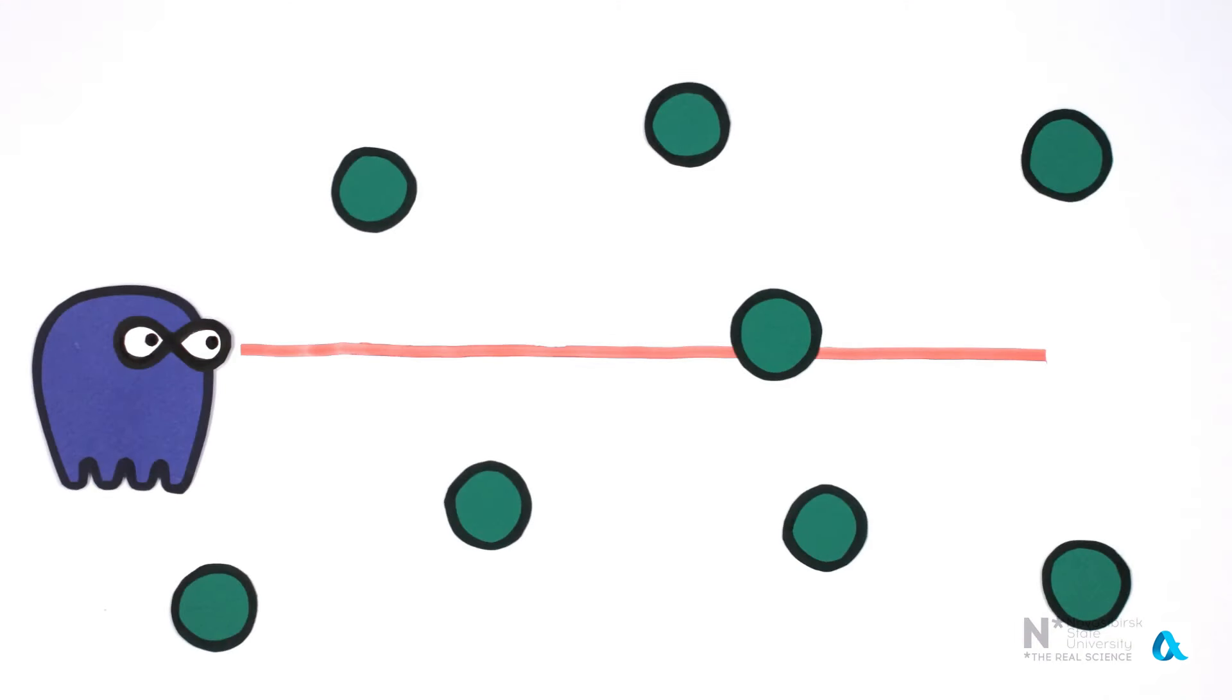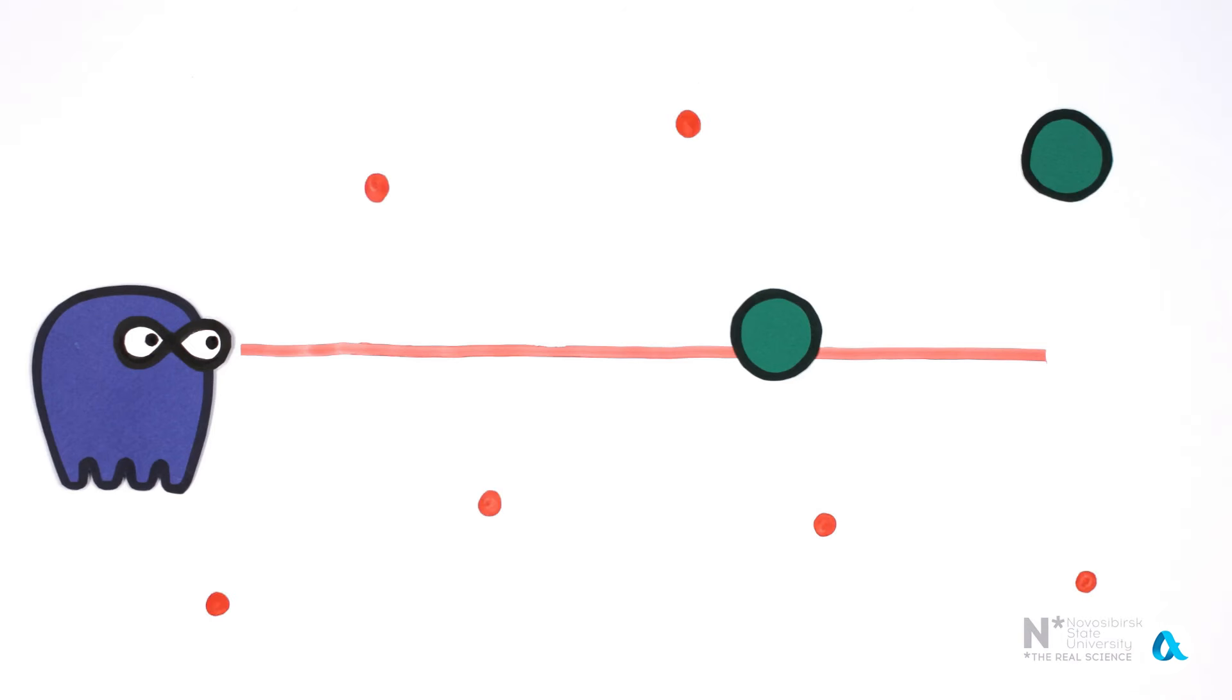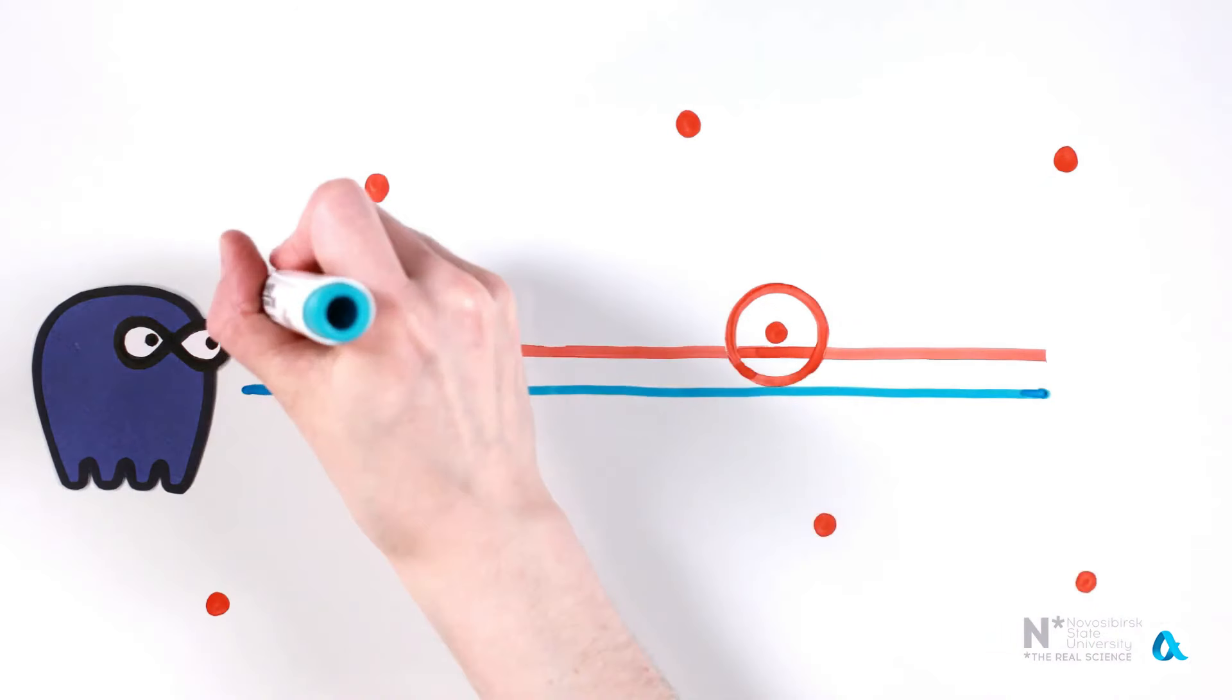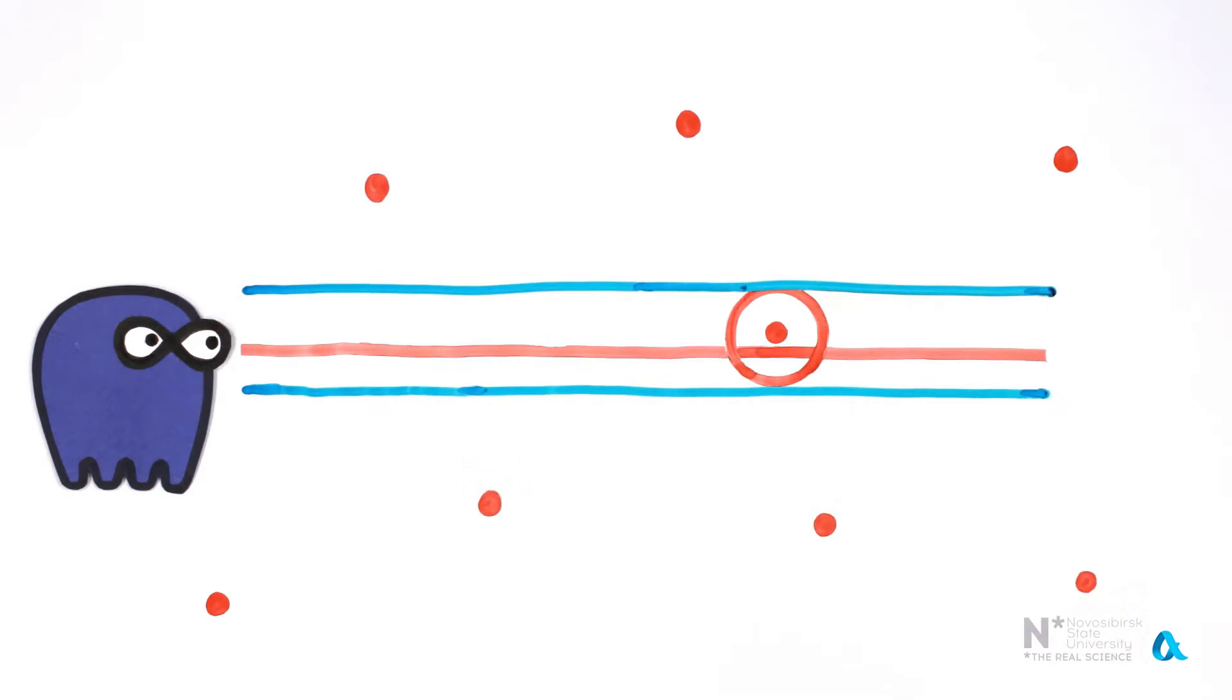To estimate the mean free path, let's perform a geometric trick in order to accurately and precisely calculate it. Let's replace each tree with a point, the center of the corresponding circle. And let's replace the line of sight with a strip, the width of which is equal to the diameter of the tree.